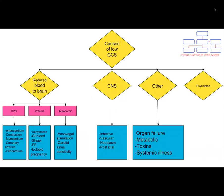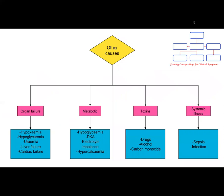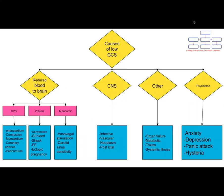Organ failure, toxins, and systematic and all other metabolic causes can affect the cerebral metabolism and reduce consciousness level. Anxiety, panic attacks, and hysteria can also present as altered consciousness.